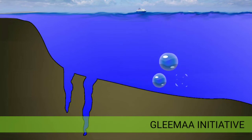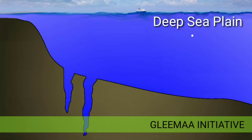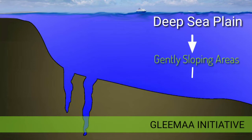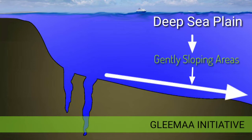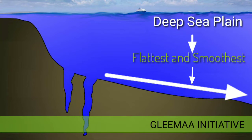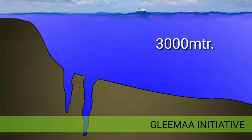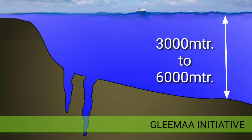The deep sea plains are gently sloping areas of the ocean basins. These are the flattest and smoothest regions of the world, with varying depths of 3000 to 6000 meters.